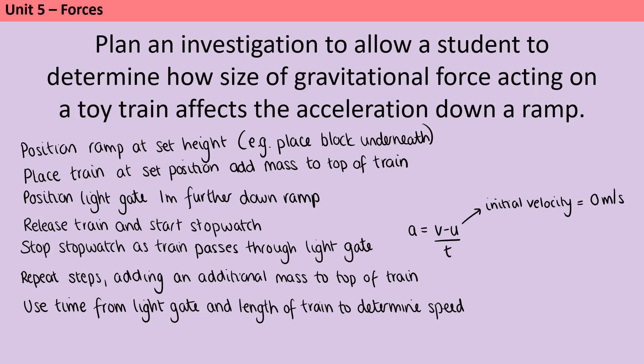So your initial velocity of course is going to be zero. The train length divided by the time it takes to break the light gate would give us the velocity at the end, and then the time taken is the time that you've measured on the stop clock.